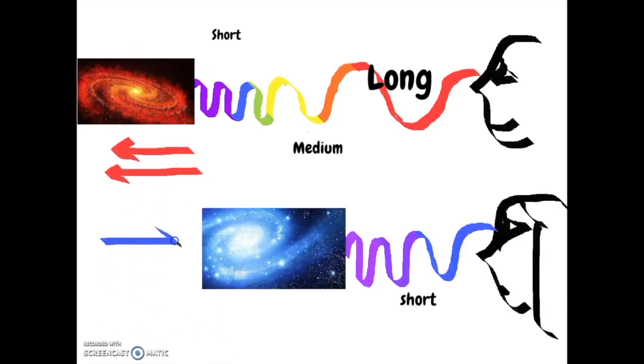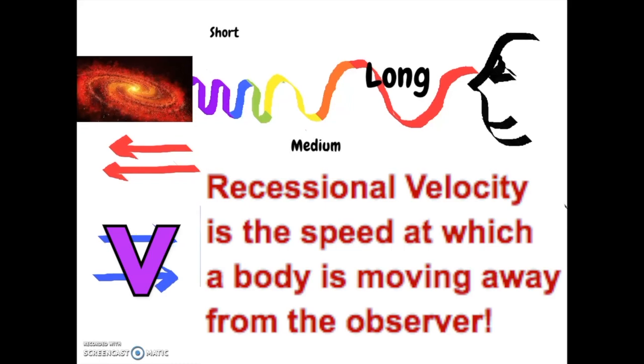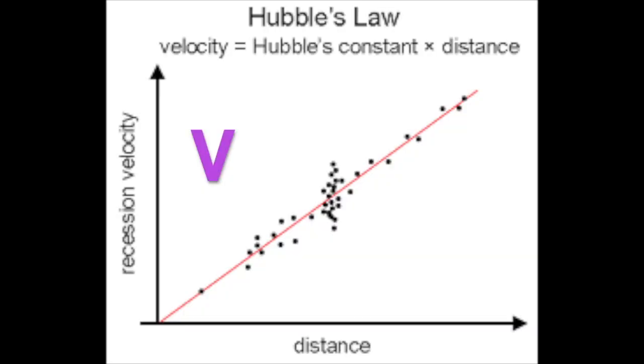Schleifer used redshift to find the speed, or recessional velocity, that these galaxies were moving away from Earth. 17 years later, Edwin Hubble discovered a proportional relationship between the recessional velocity of these galaxies and the distances to them.